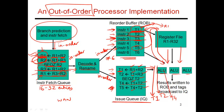The issue queue is the smart unit that keeps track of which instructions have their operands available and issues them accordingly. The key innovation is that if some earlier instruction is stalled because of data dependencies, that should not prevent later instructions from executing. If a later instruction has both of its operands available, you should be able to issue it.